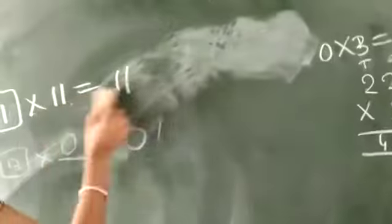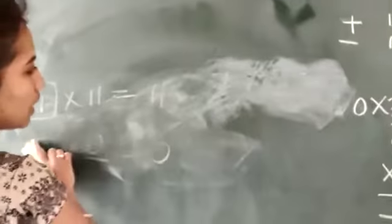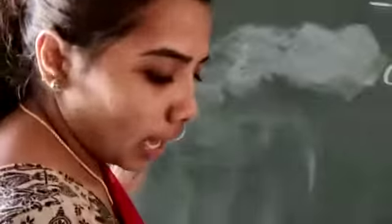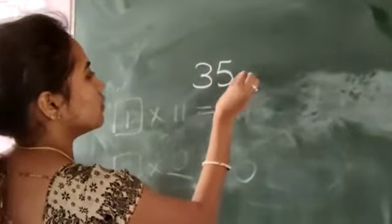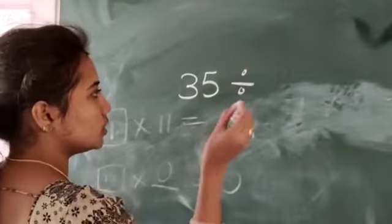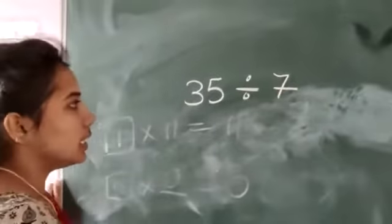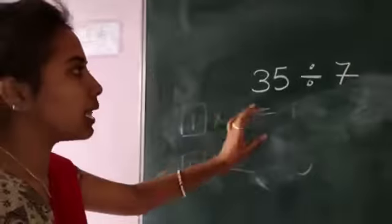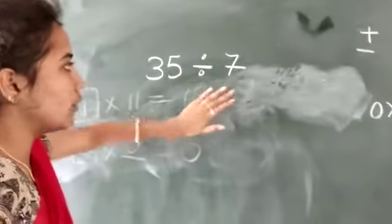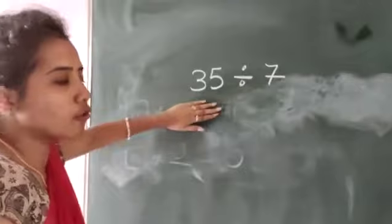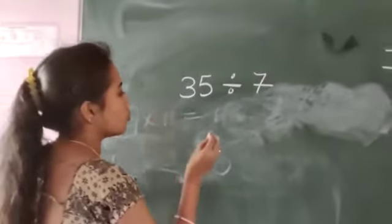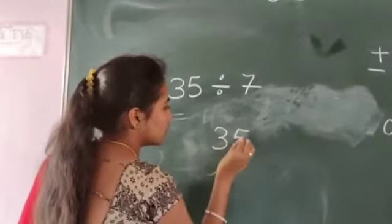Like that only, you have division. How to do division? You have 35. This is our division question: 35 divided by 7. If you are able to tell the 7 table, then only you can solve this problem. You have to write like this: 35.